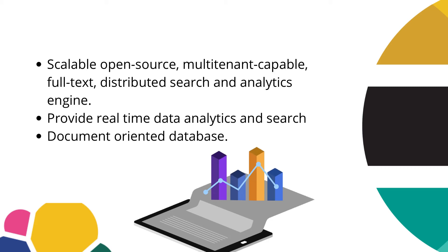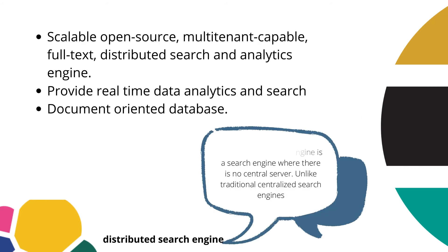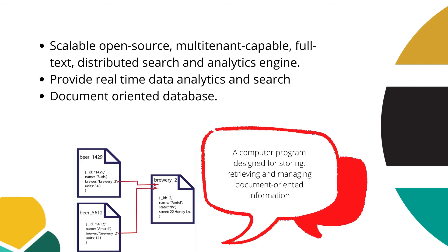The next point is that it is a document-oriented database. What is a document-oriented database? It's a database that is used to store, retrieve, and manage documented information. This means every piece of information will be saved in the form of a document. As you can see in the picture below, this is how Elasticsearch saves its data.